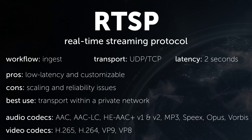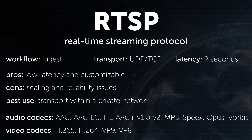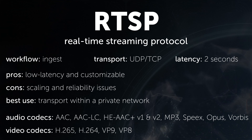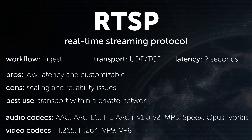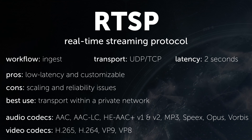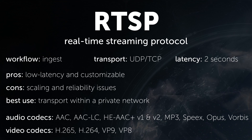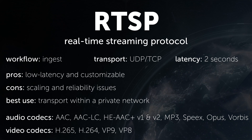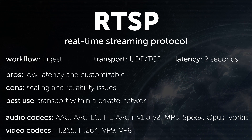RTSP is mainly used by IP cameras today, especially for closed circuit television. The protocol was designed to command media servers on a private network. It uses UDP, so it's very low latency, but it can also use TCP, and it's pretty customizable. On the downside, it doesn't scale well, isn't reliable on poor networks, and it's not supported by HTML5. On a private network is where it excels best, used between IP cameras, switchers, and media servers.